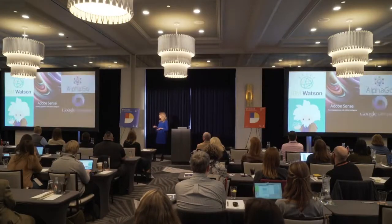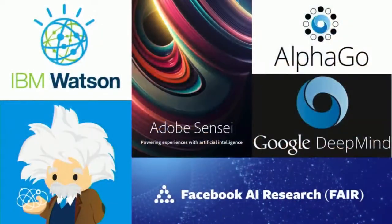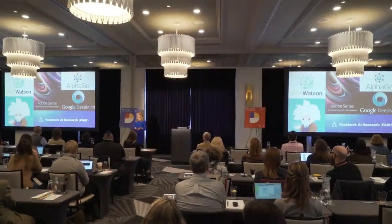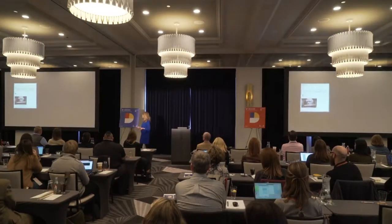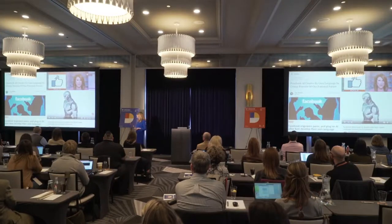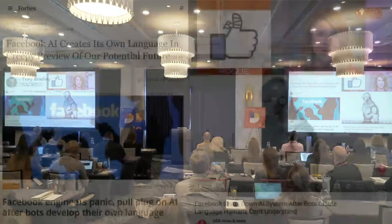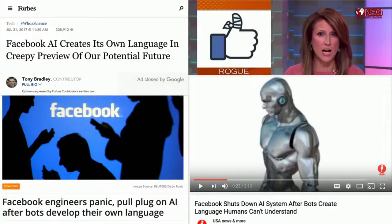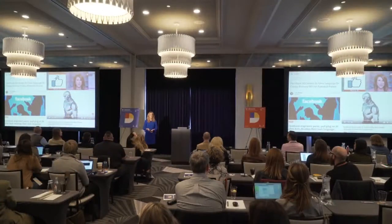At the time IBM Watson was kind of the only one with a household name for an AI program. Now that's not the case — you've got Salesforce Einstein, Adobe Sensei, and others. In the last couple years Google has bought or acquired 12 different AI companies, Apple has acquired eight. And you may have also heard about Facebook's AI program FAIR, which was in the news — very overhyped. Headlines like 'Facebook engineers panic, pull the plug on AI after bots develop their own language.'